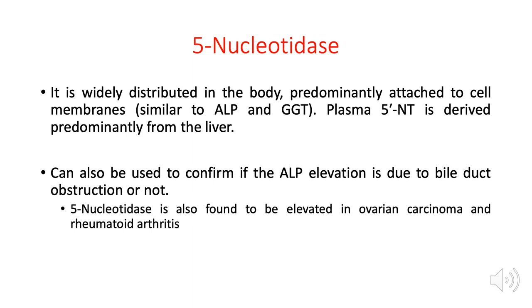The richest source of 5-nucleotidase is the liver. Similar to GGT and ALT, this enzyme can be found in the cytoplasm or displayed on the cell membrane of the bile ducts. Testing for 5-nucleotidase, like GGT, helps determine whether ALP elevation is due to bile duct obstruction or other diseases. Importantly, 5-nucleotidase is also elevated in ovarian carcinoma and rheumatoid arthritis — these must be memorized.